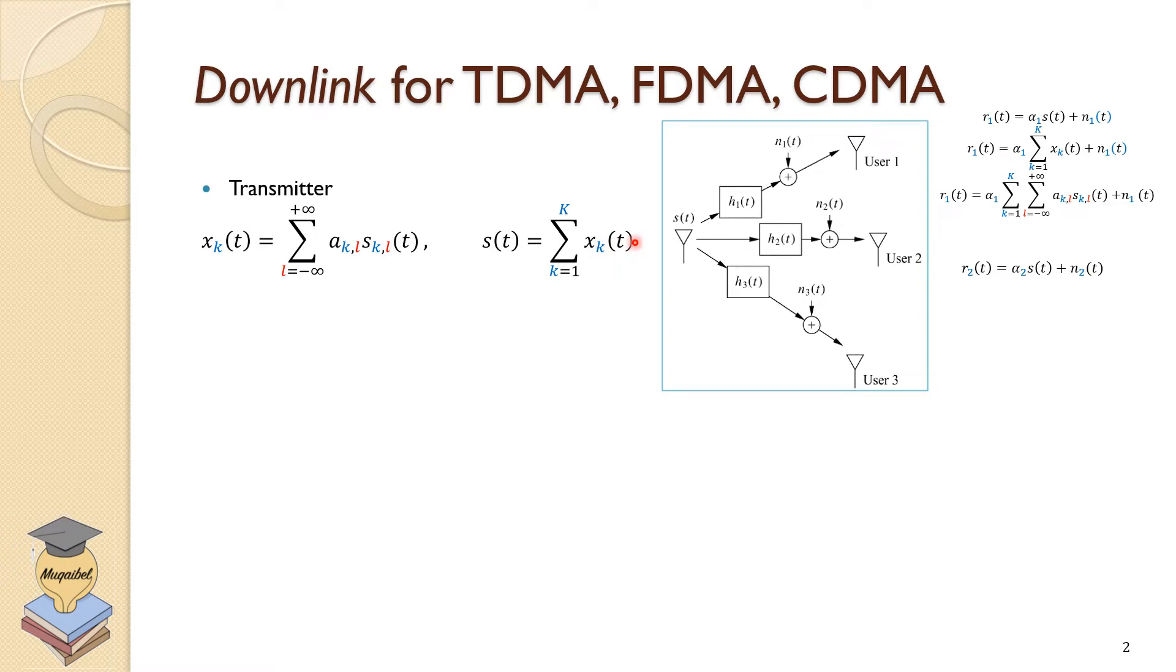The signal is sum of X sub K where X is a signal transmitted to user K. Remember that every signal for every user we're going to transmit a sequence of bits, sequence of symbols. K represents the user and L represents the symbol.